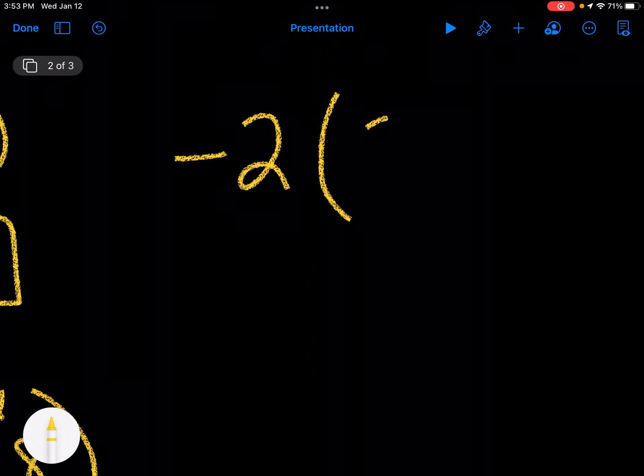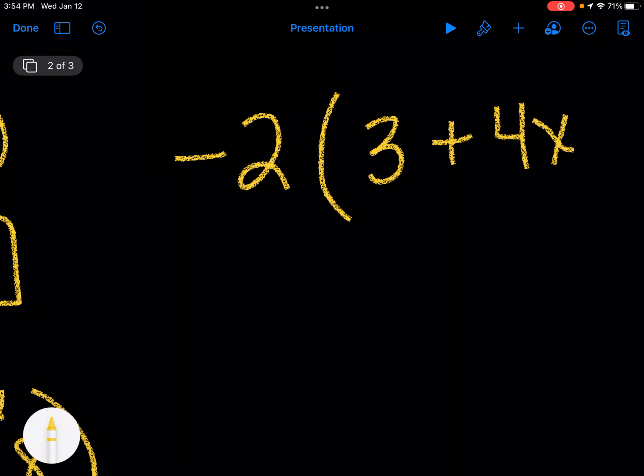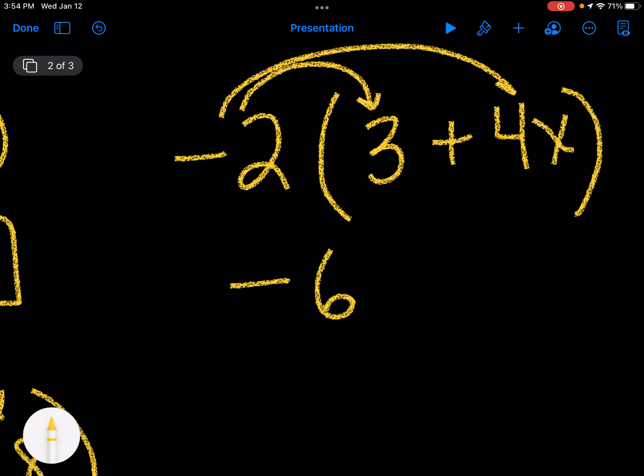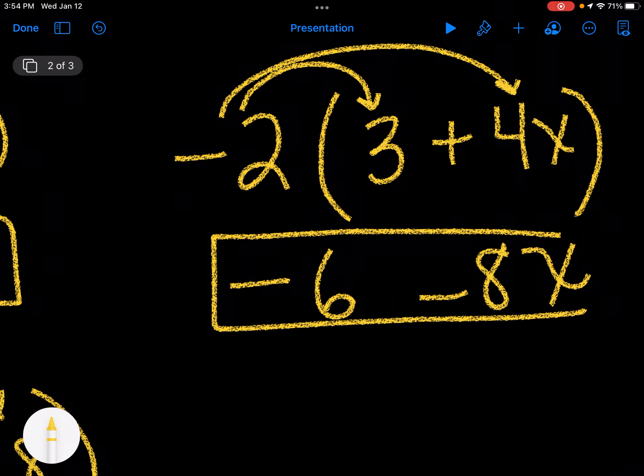Let's take a look at some negative numbers. Let's say if I have a negative 2 times, let's say, 3 plus 4x. So negative 2 times 3 would be negative 6, negative 2 times 4 would be negative 8, and I bring the x along for the ride. So I have negative 6 minus 8x.